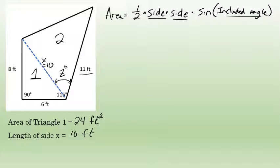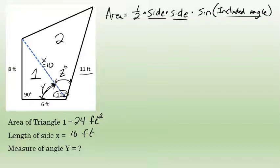Angle z is part of a 115-degree angle that I've been given. That 115-degree angle is made up of an angle inside triangle 1 — I'll call that angle y — and angle z in triangle 2. Because angle y is part of the right triangle 1 that I know a lot about, I can use trigonometry to find the measure of angle y. In triangle 1, angle y's opposite side is the side that is 8 feet.